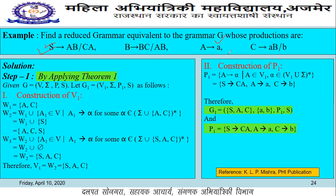We have grammar G and we have to construct a corresponding reduced grammar G2. First we construct grammar G1 by applying Theorem 1 in Step 1, and after that we go for grammar G2, which is the purely reduced grammar. In Step 1, we apply Theorem 1 which eliminates all those variables which are not deriving any terminal string.